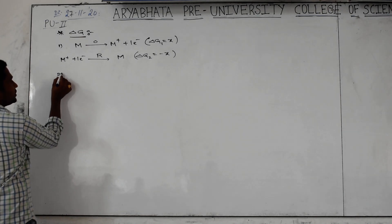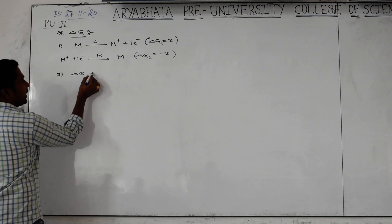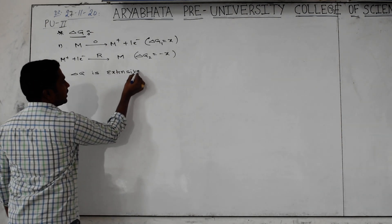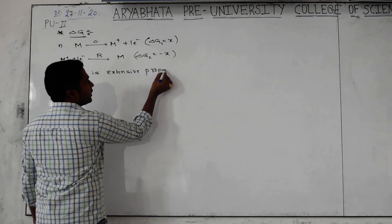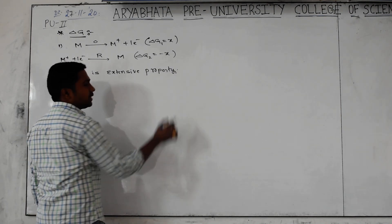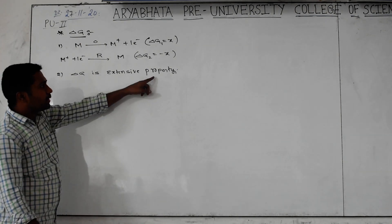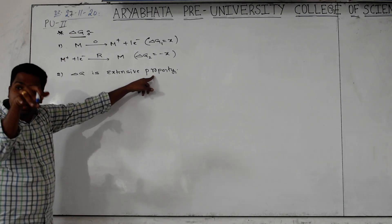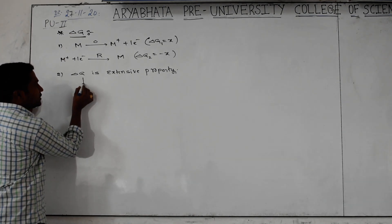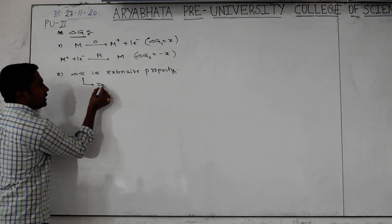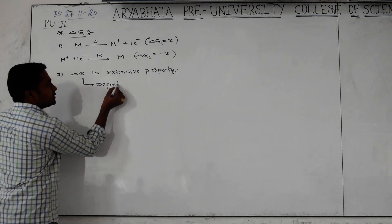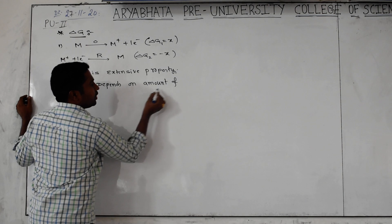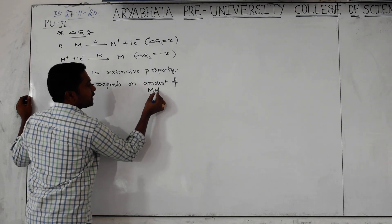And you can go for the concept that delta G is an extensive property. Delta G is the extensive property. What is the meaning of extensive property in thermodynamics? It is the property of a system or process which depends on the amount of the metal present in it. Means delta G is the extensive property — the delta G value depends on the amount of metal which will be taken in that cell.